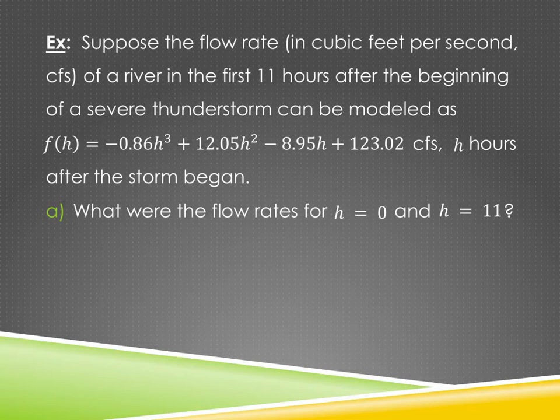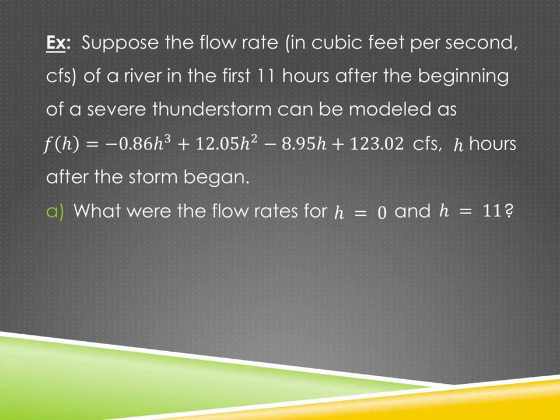Part A asks: what were the flow rates at H = 0 and H = 11? In other words, what's the flow rate at the beginning and at the end? Have you seen the waters go up in a river when thunderstorms come in? Those waters can change very quickly. So on this problem, it just wants F(0) and F(11).